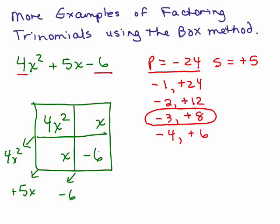So that's what we want to put in here. It doesn't matter where we put the negative 3, where we put the 8. So let's just put the 8 here and the negative 3 there. You could switch it and you'll get exactly the same answer. So now let's start with the first column. Pull out the greatest common factor to the top. That's going to be x.